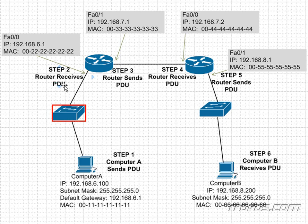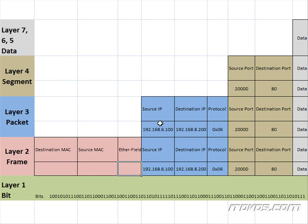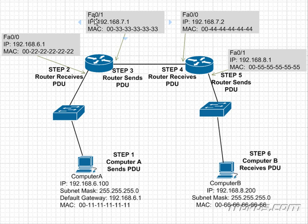Now we're on step two. The router receives the PDU. The decapsulation process is going to happen — the router gets the frame, reassembles the bits, and strips off the Layer 2 header because it sees it is the correct destination. That leaves the packet, and the router sees that the destination IP address is 192.168.8.200. It looks in its routing table — we'll talk about routing tables in depth later — but basically the routing table tells what port this packet should be forwarded out. The routing table says it should be forwarded out of IP address 192.168.6.1, MAC address 00-33-33-33.